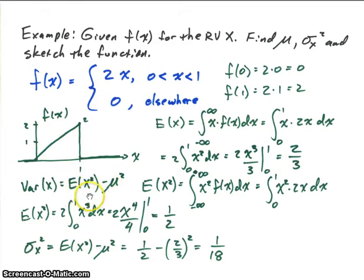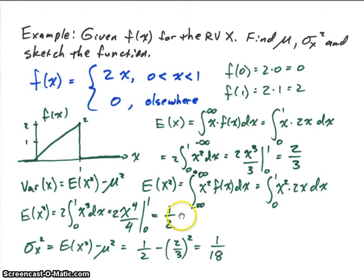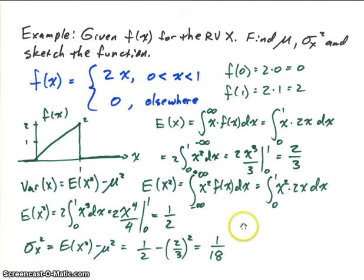For the variance, we use the expected value of x squared minus the mean squared. The expected value of x squared: we integrate x squared times 2x from 0 to 1, which is the integral of 2x cubed. Integrating gives 2x to the fourth over 4, evaluated at our endpoints, which equals 1/2. The variance is then 1/2 minus (2/3) squared, which gives us 1/18. If the variance ever comes out negative, you know you've done something wrong, since it can never be negative.